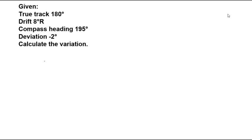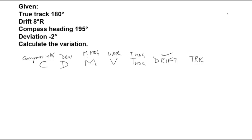For this question, once again we will use CDMVT. This T is true heading, then drift and track. I will explain how to use the CDMVT drift track before I solve this question. So C stands for compass heading. D stands for deviation. M stands for magnetic heading. V stands for variation. And lastly, we have the track.